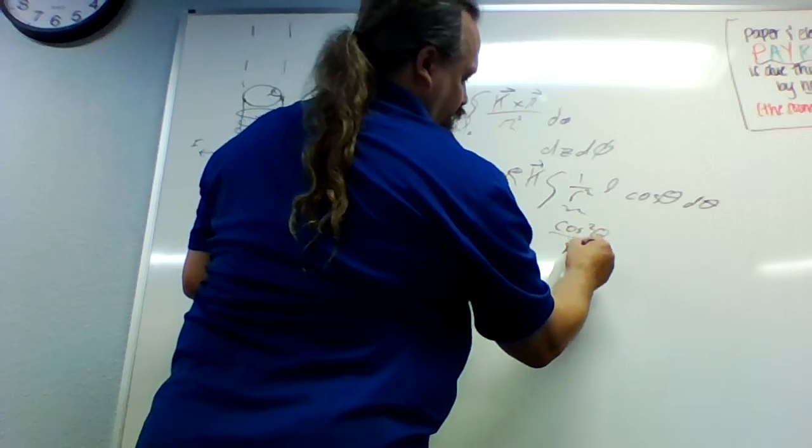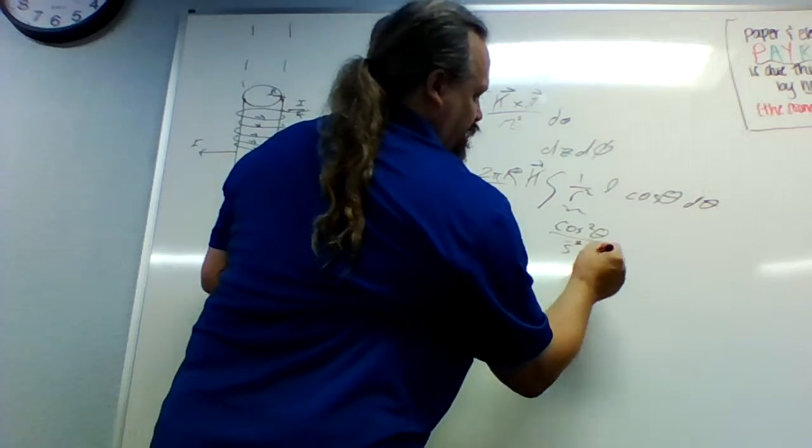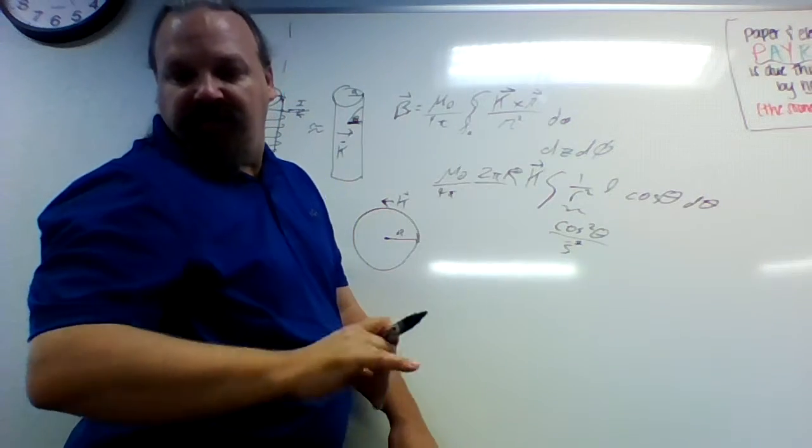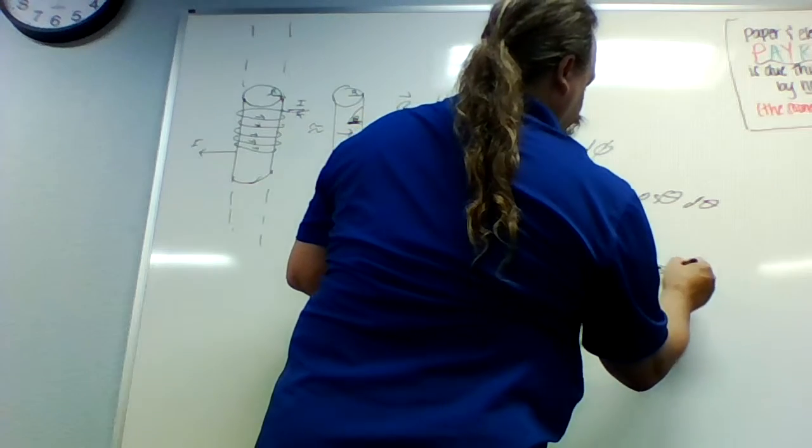Which is, of course our inner s squared. And this part becomes s cosine squared theta.